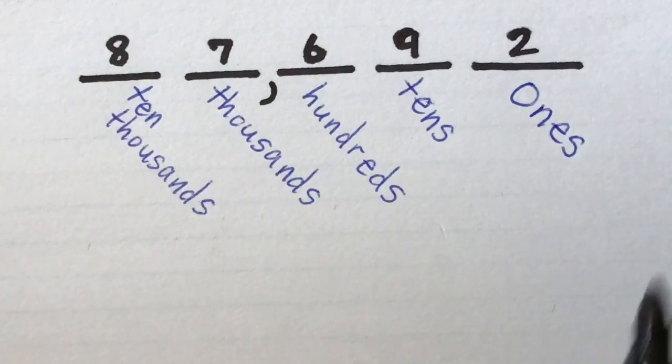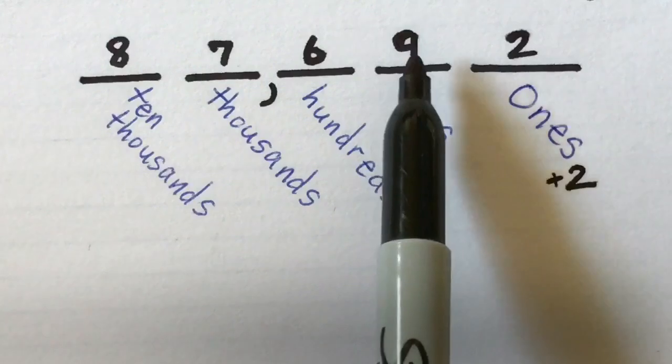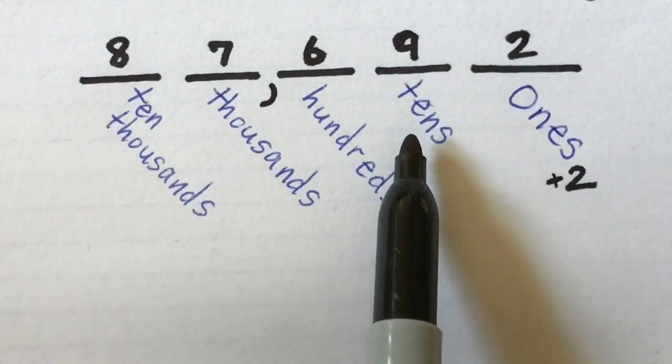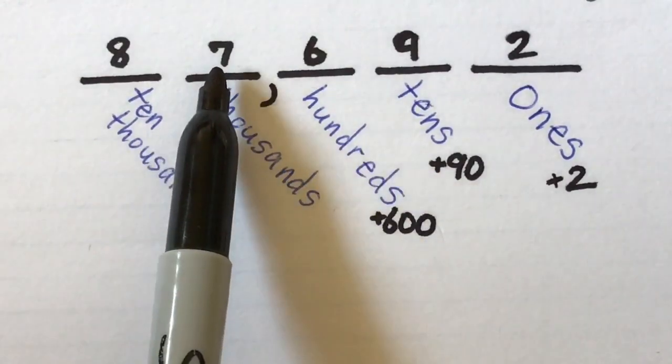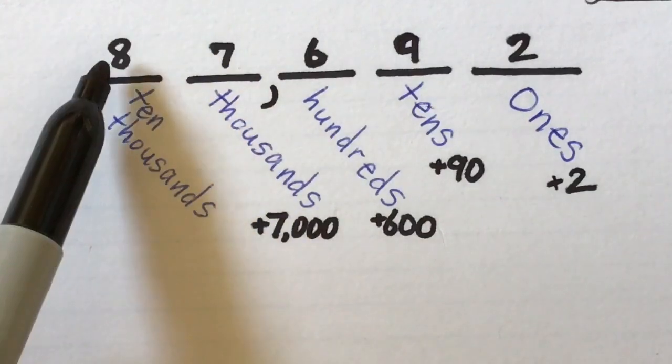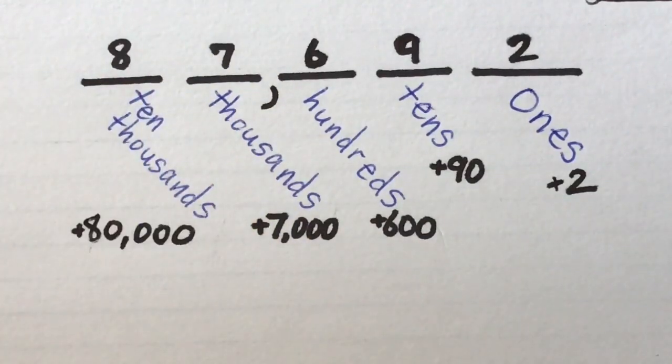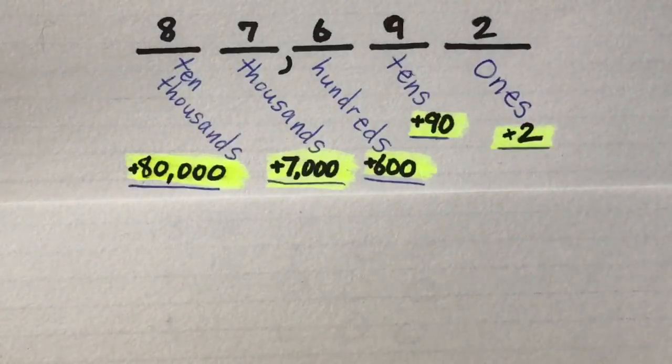Let's go ahead and find the value of each digit. 2 times 1 is 2. 9 times 10 is 90. 6 times 100 is 600. 7 times 1,000 is 7,000. And 8 times 10,000 is 80,000. We have officially found all of our numbers to create our expanded form.